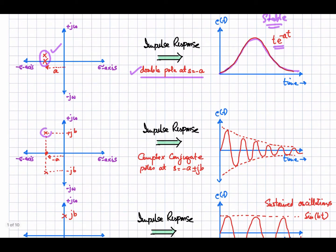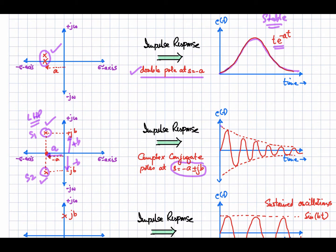If we have two complex conjugate pairs of poles in the left half plane, the pole positions are s equal to minus a plus or minus jb — the real part minus a along the real axis and plus or minus b along the j-omega axis. The impulse response shows oscillations that decay to zero. It is finite, so this is a stable system with bounded output.